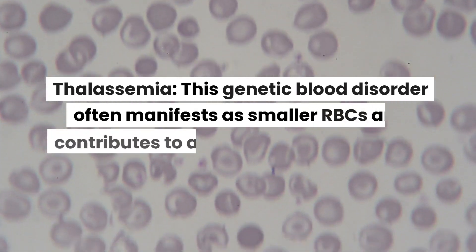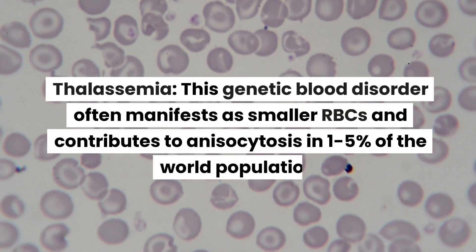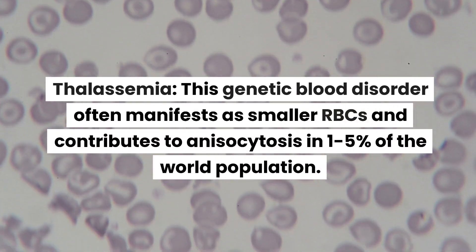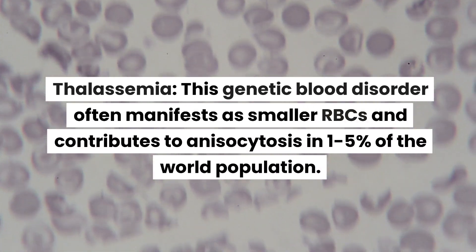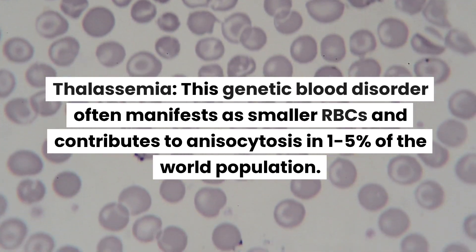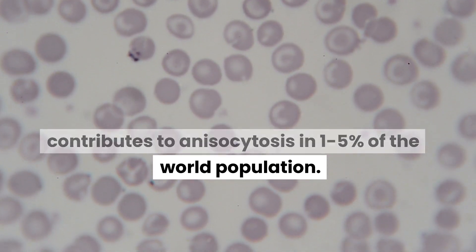Thalassemia: this genetic blood disorder often manifests as smaller RBCs and contributes to anisocytosis in 1–5% of the world population.